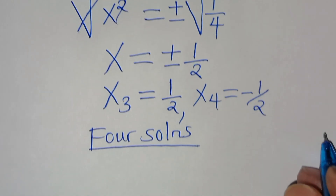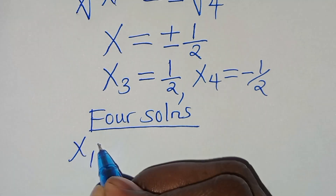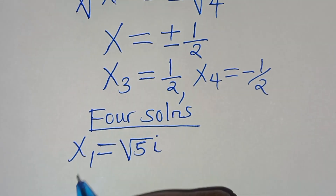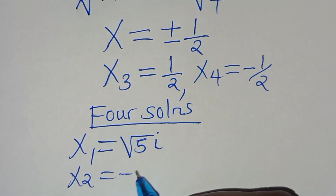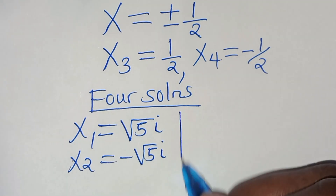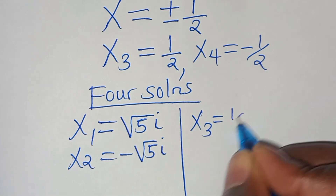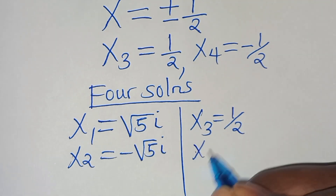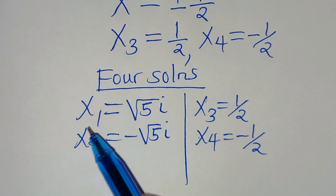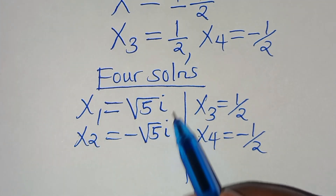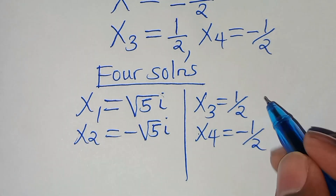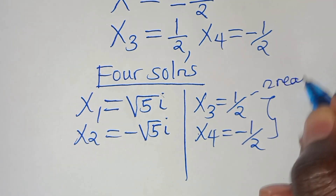This gives us 4 solutions in total: x₁ = √5·i, x₂ = -√5·i, x₃ = 1/2, and x₄ = -1/2. x₁ and x₂ are two complex solutions, and x₃ and x₄ are two real solutions.